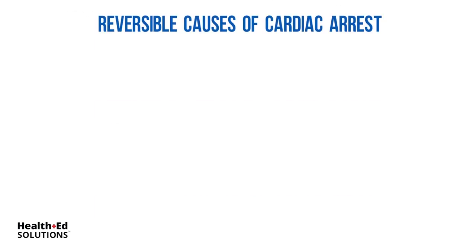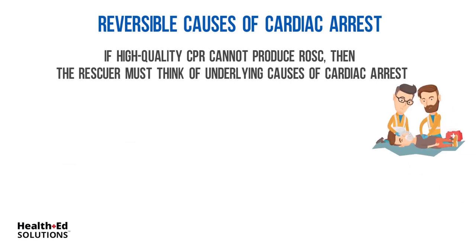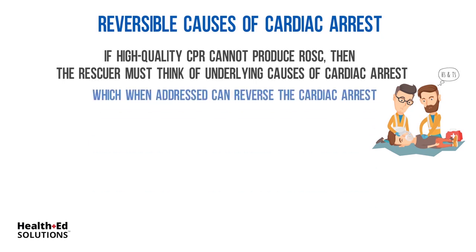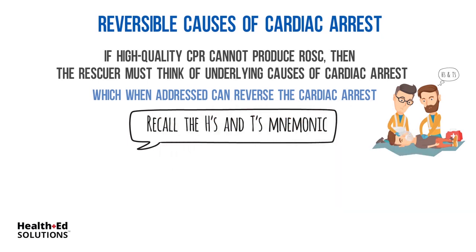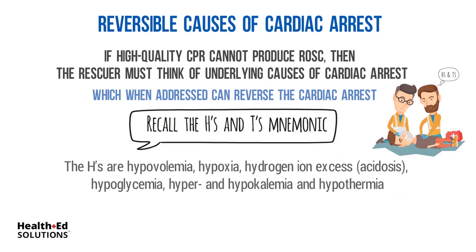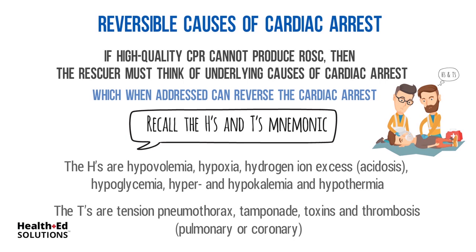Reversible causes of cardiac arrest: if high-quality CPR cannot produce ROSC, the rescuer must think of underlying causes that, when addressed, can reverse the cardiac arrest. Recall the H's and T's mnemonic. The H's are: hypovolemia, hypoxia, hydrogen ion excess (acidosis), hypoglycemia, hyper- and hypokalemia, and hypothermia. The T's are: tension pneumothorax, tamponade, toxins, and thrombosis — pulmonary or coronary.